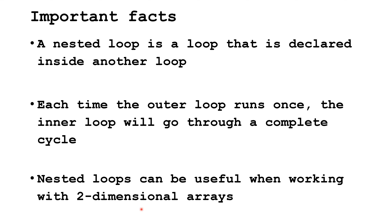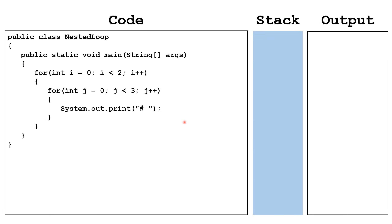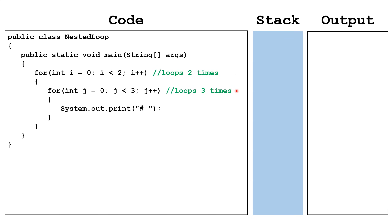Let's look at some code. We have a class called NestedLoop with a main method. The outer loop starts i at 0 and runs while i is less than 2 — so it goes through twice (i=0, i=1). Inside, we have an inner loop using counter j, starting at 0 and running while j is less than 3 — so the inner loop runs three times. Every time the outer loop goes through once, the inner loop goes through three times. In total, 2 times 3, the inner loop will run 6 times.